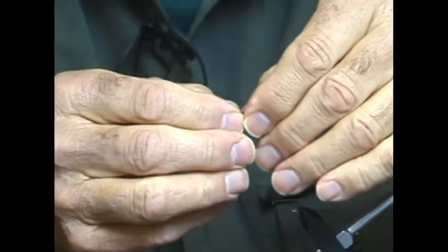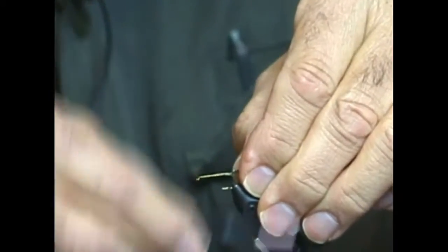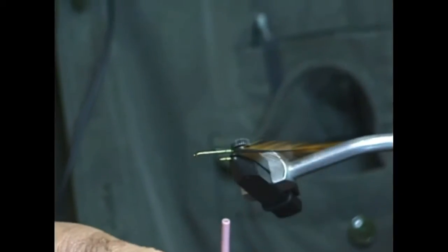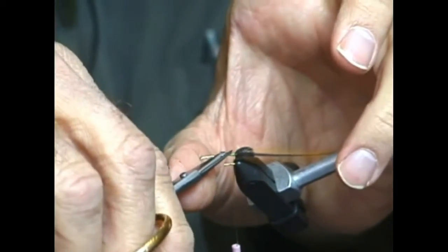Then with the dull side of the feather facing me I'm going to lay the tie-in point against the hook shank and make several wraps around the hackle and the hackle is now tied to the hook shank. That allows me to clip the waste off.